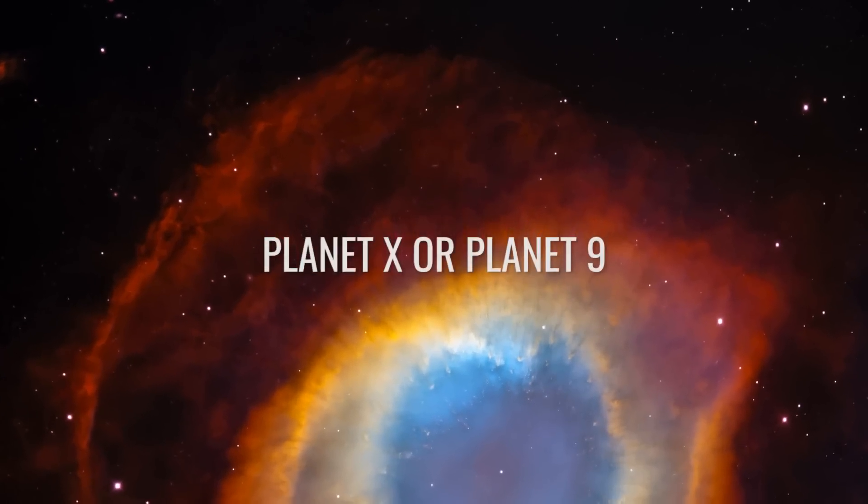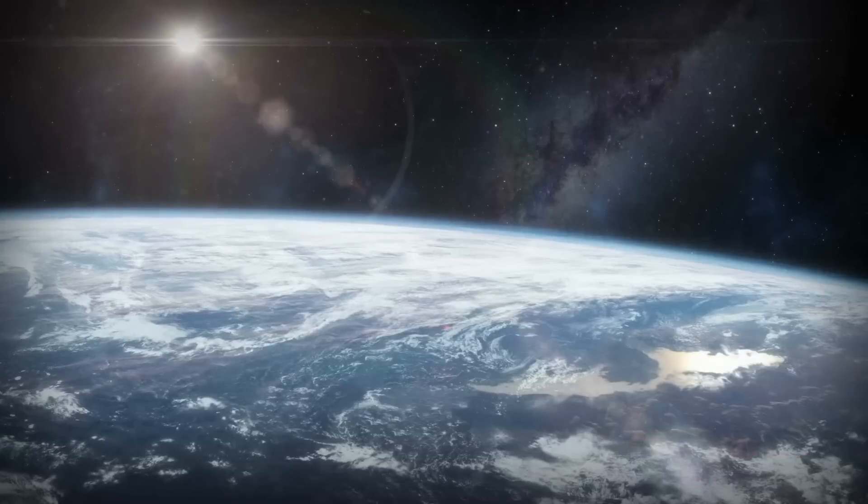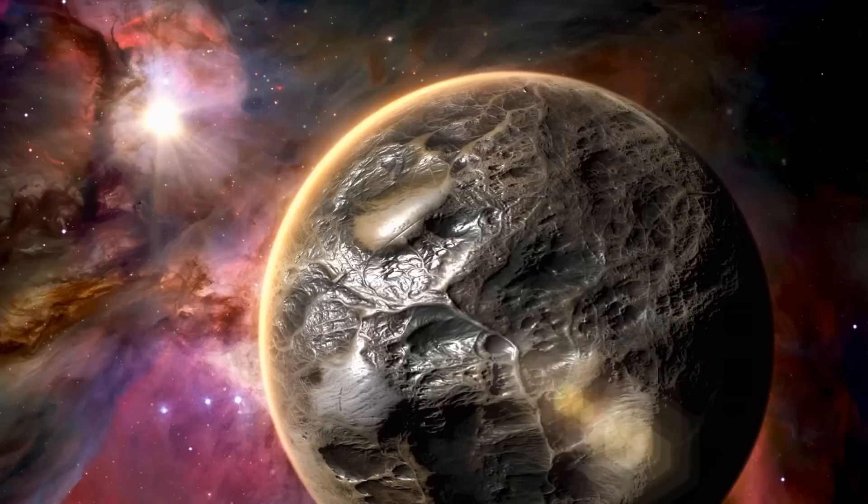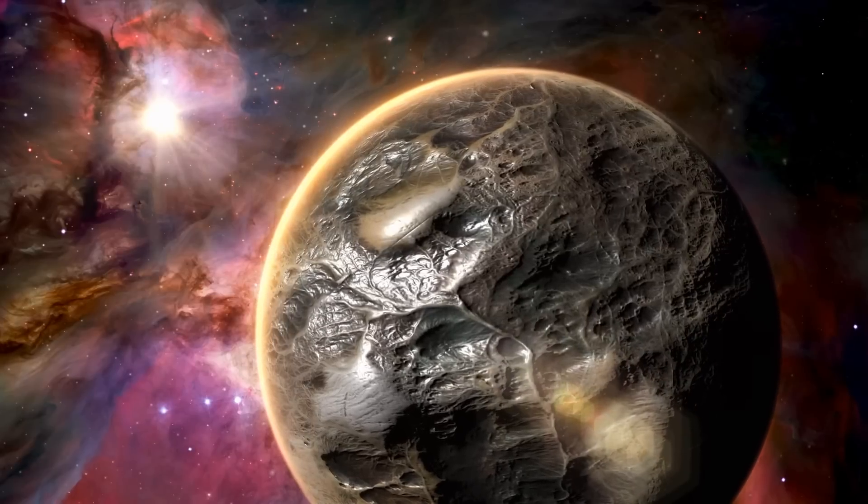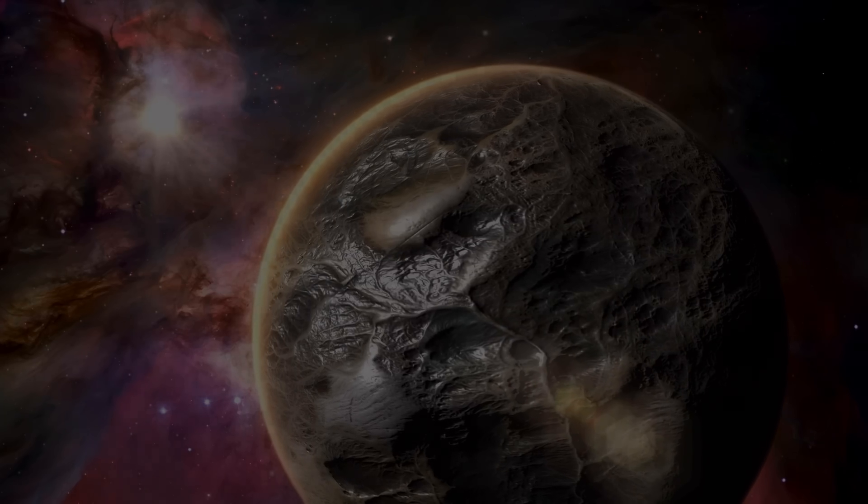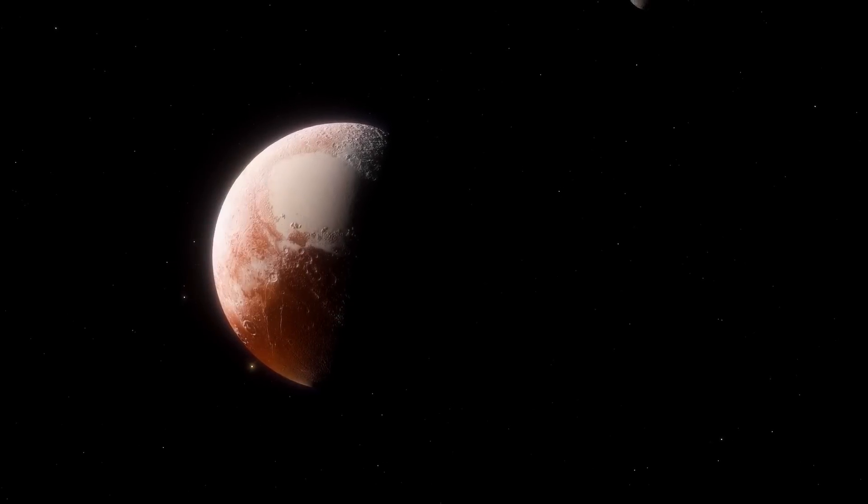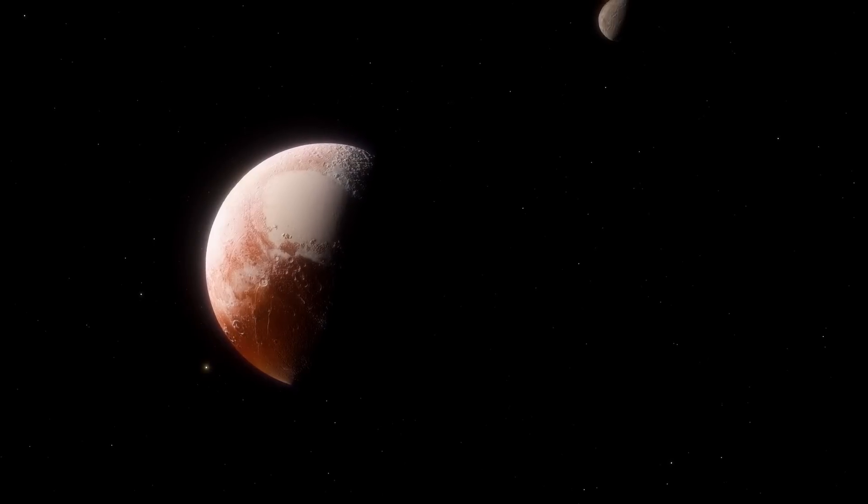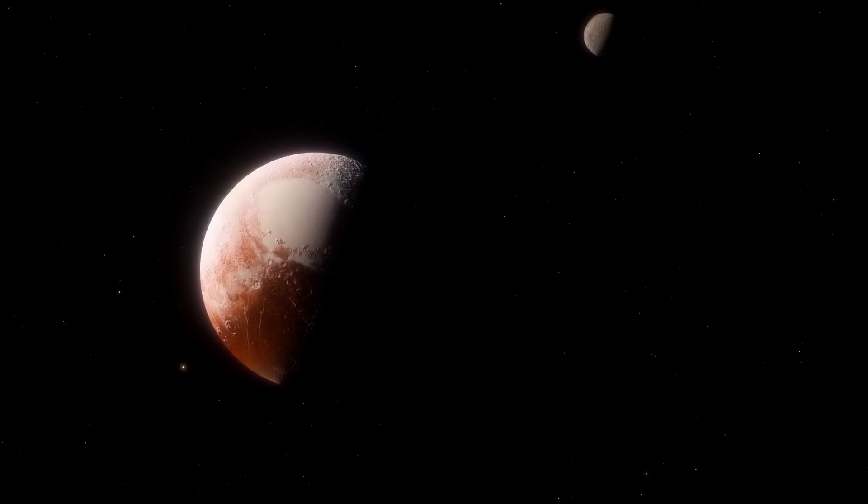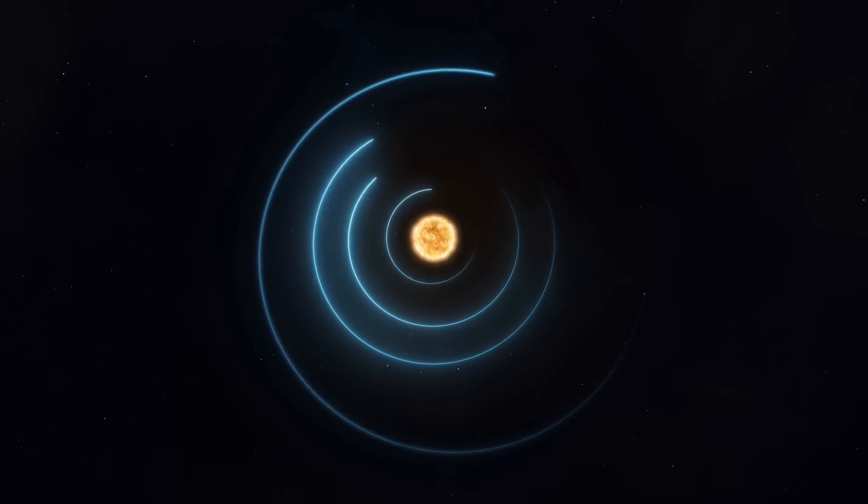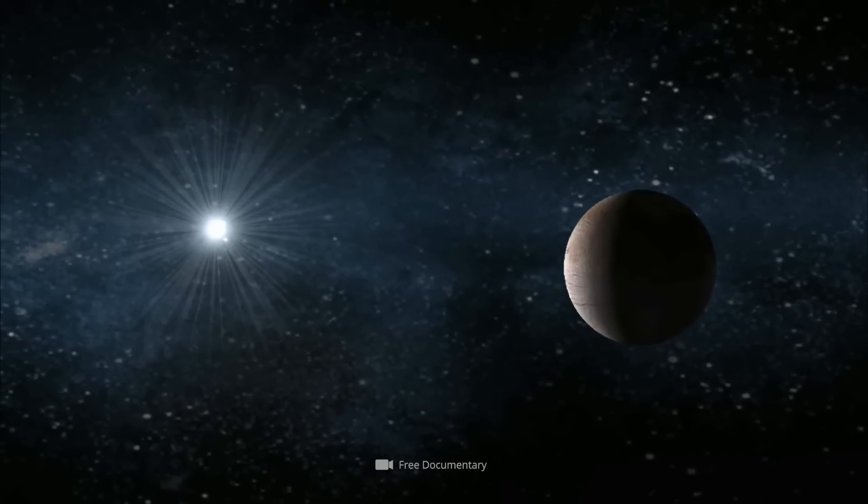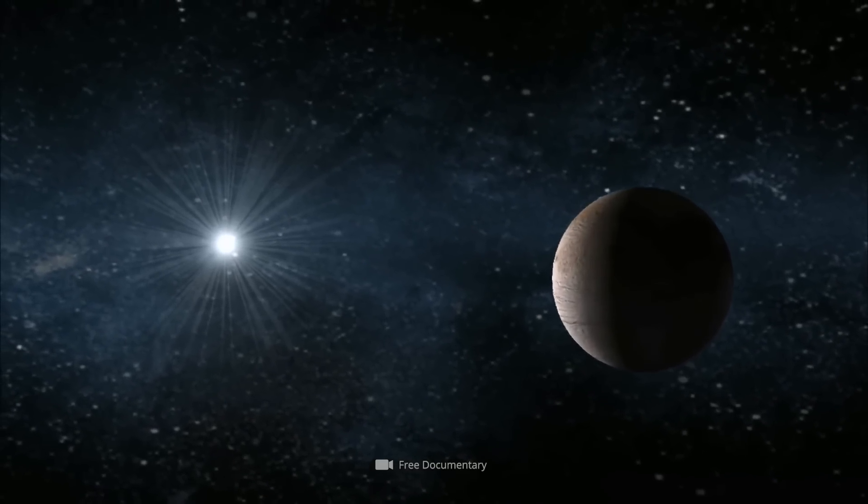Planet X or Planet Nine. For decades, the world of science had already been circulating the rumor that there might be another planet at the far edge of the solar system. When Pluto still had its planetary status, the as-yet undiscovered one was called the 10th planet or Planet X. Since Pluto officially ceased to be one of the main planets in 2006, Planet X was given the new epithet, Planet Nine.